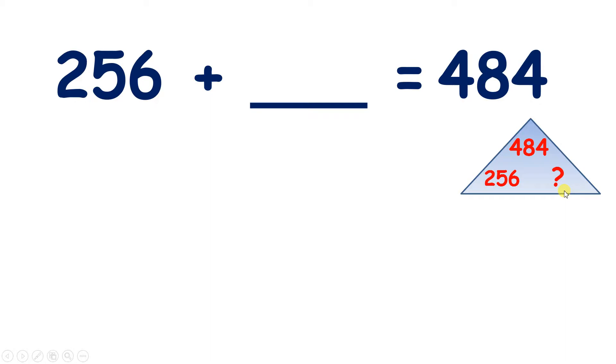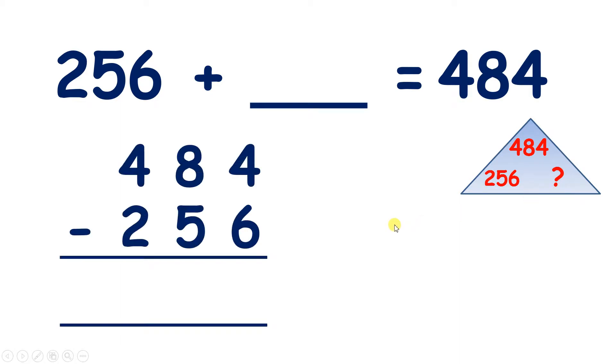So what can we do? Well, we know that if we subtract a bottom number from a top number, we get the other bottom number. So we can work out 484 minus 256 to find that missing number. Sometimes this is called using the inverse operation, because we have an addition, but we're using subtraction to find our answer.